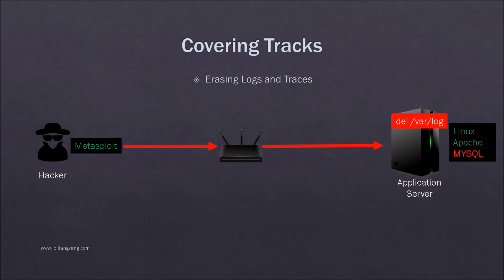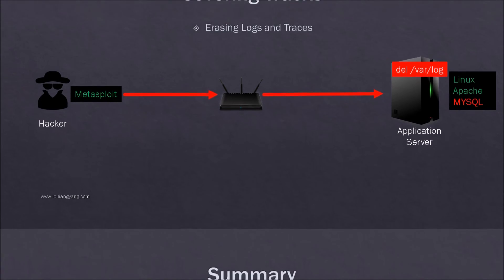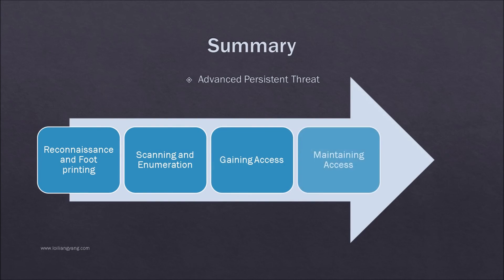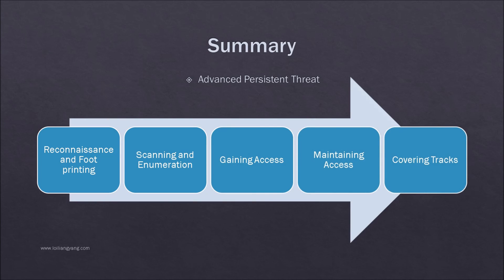In today's presentation we covered the APT methodology for gaining unauthorized access into a target organization's system. The first phase is reconnaissance and footprinting — uncovering information passively through the organization's website and online tools. The second phase, scanning and enumeration, makes use of tools like Nmap and Nessus to identify running systems and service versions.